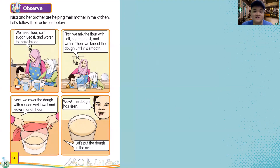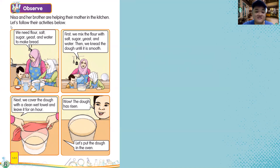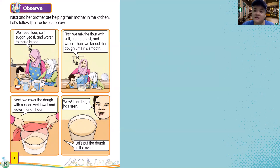Let's look at another example of how we observe. Nisa and her brother are helping their mother in the kitchen — they must be cooking! The mother says they need flour, salt, sugar, yeast, and water to make bread. Let's make bread together with Nisa, her mother, and her brother.